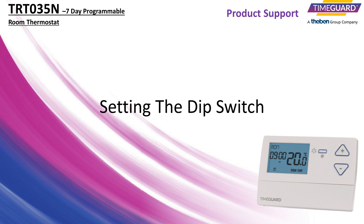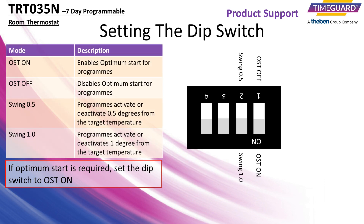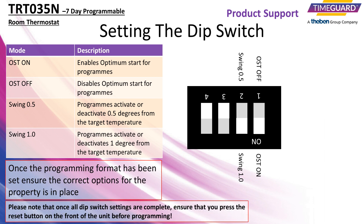DIP switch settings. On the back of the unit, a DIP switch can be located at the top right-hand side. It is important that the switch is set correctly for the installation required. If optimum start is required, set the DIP switch to OSD on. To set the swing to 1 degree, set the DIP switch to swing 1.0. Once the programming format has been set, ensure the correct options for the property are in place.